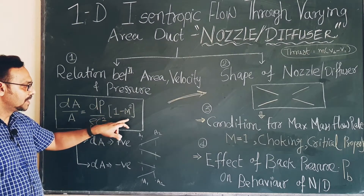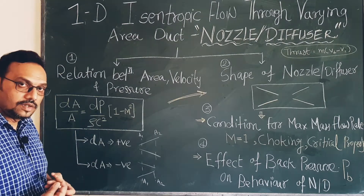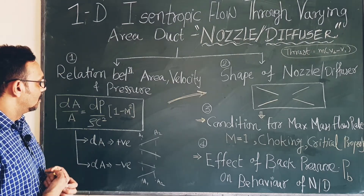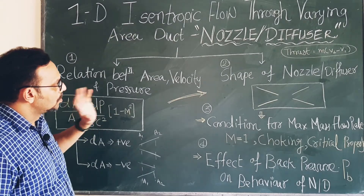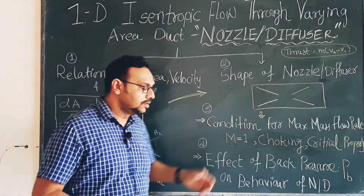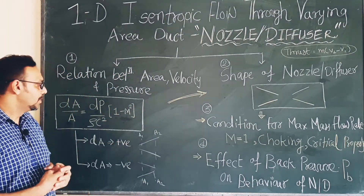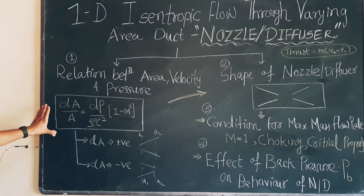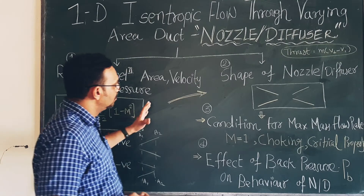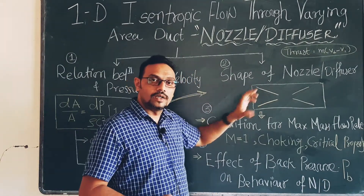The Mach number defines three different types of flow: subsonic, supersonic, and sonic. How the nozzle and diffuser respond to subsonic, supersonic, and sonic flow can be understood from this first theory, which is very important in order to design the shape of the nozzle and diffuser.